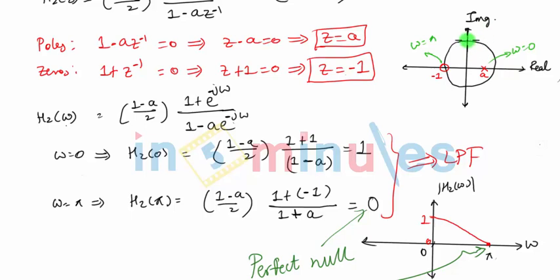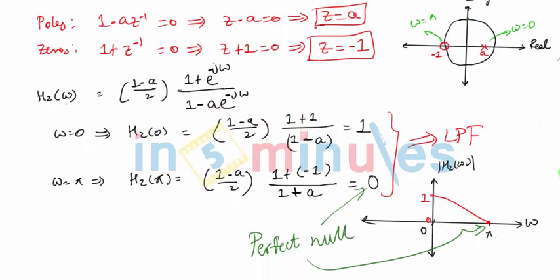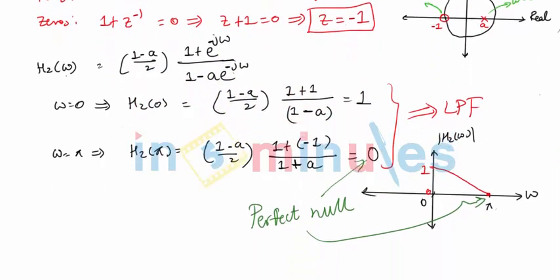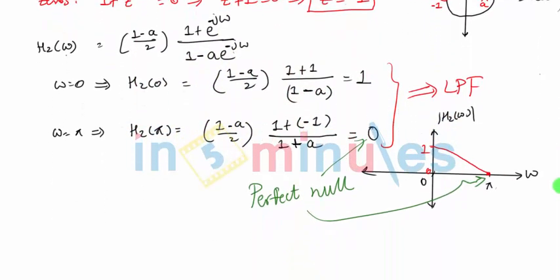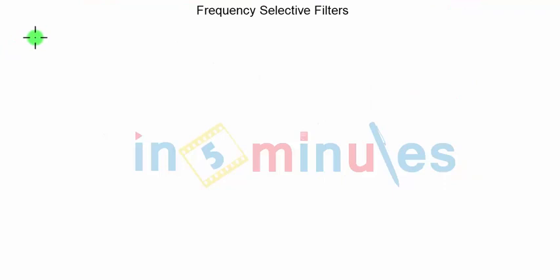We can obtain high pass filters by simply reflecting or folding the pole-zero locations of the low pass filter about the vertical axis in the z-plane. What I mean by folding pole-zero locations is, all you have to do is replace z with minus z in the expression of the low pass filter.